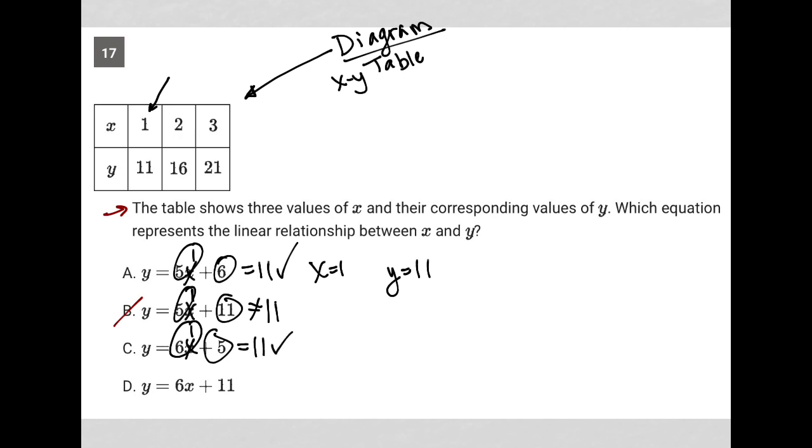And then for choice D, 6 times 1 is 6, plus 11 is 17. So not 11. So choice D is gone. So we're left with choices A and C. And now I move on to my next column. So the strategy I'm using here is called plug in information from the question. The question provides the information that I need. And there's other ways to solve this, but I do think this might be one of the faster ways.